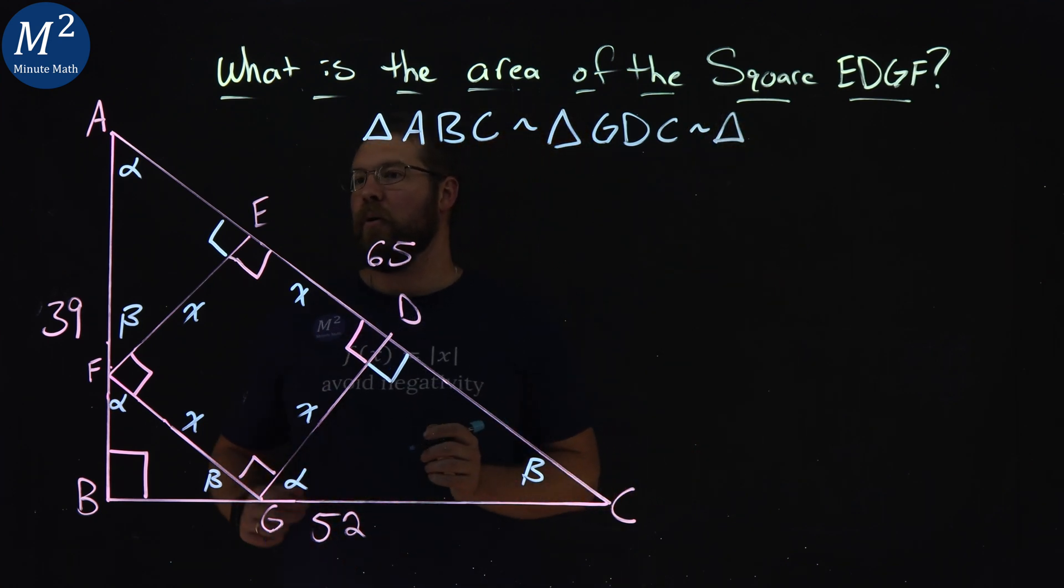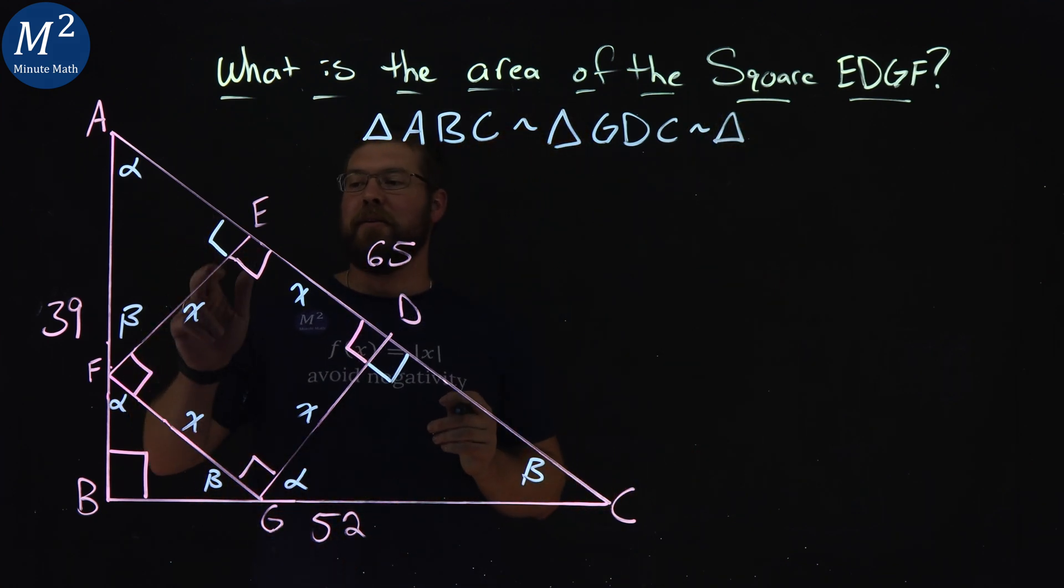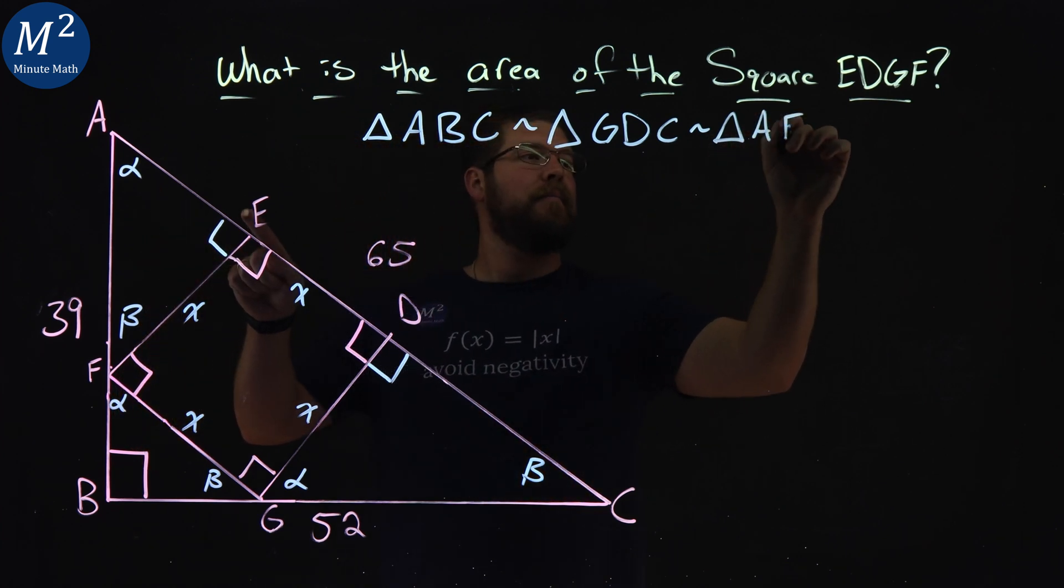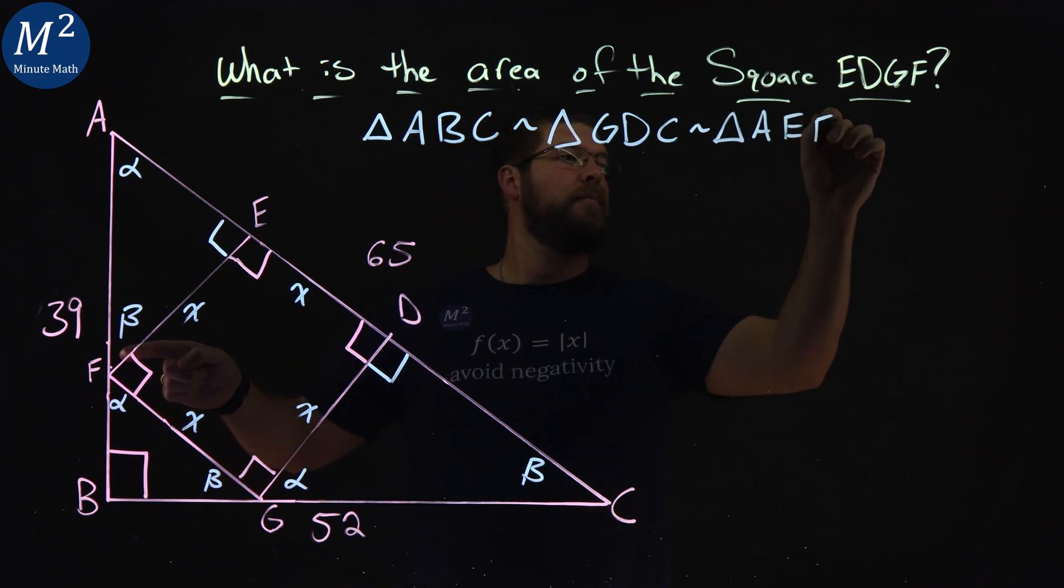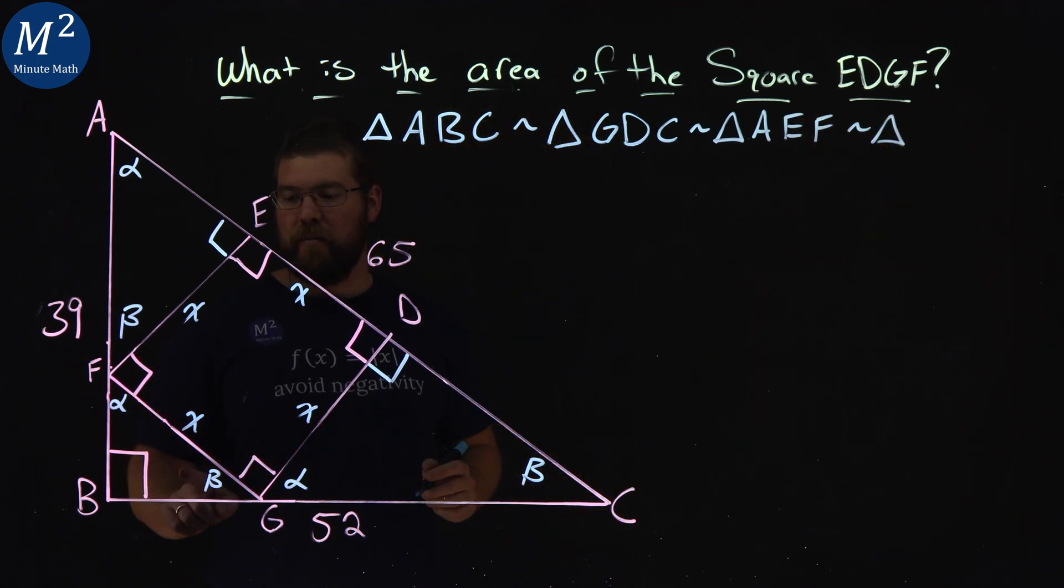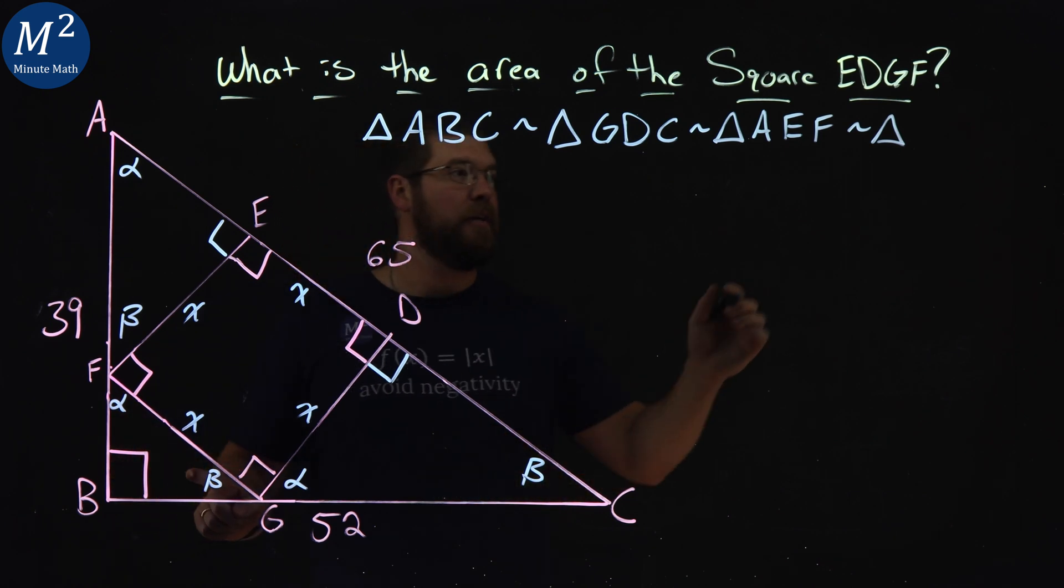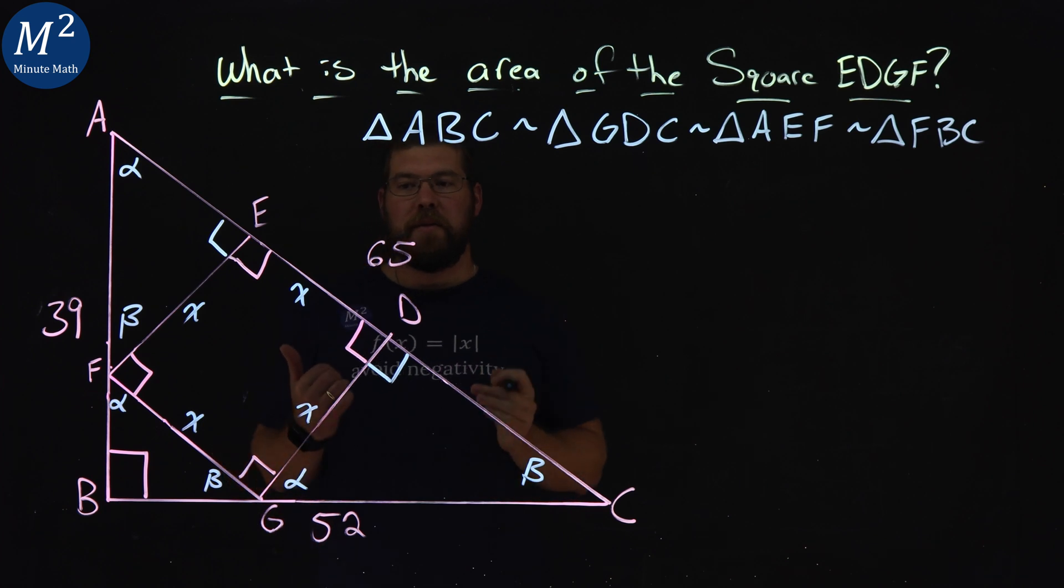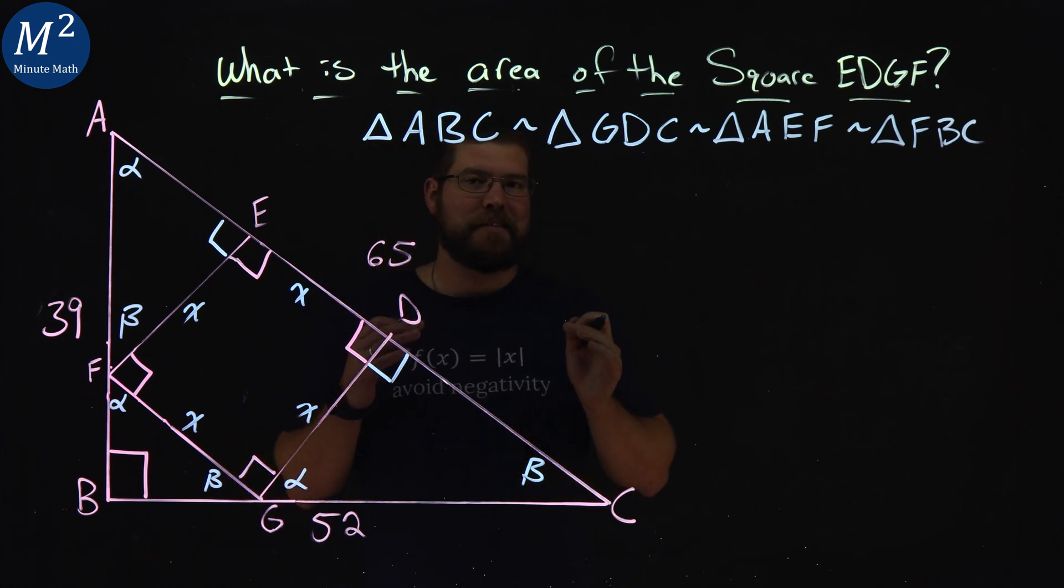Triangle, the next one, we go alpha, beta, alpha, right angle, beta. So A, E, and F is similar. Again, alpha, 90, beta, F, B, G. All right, so all of these triangles are similar.